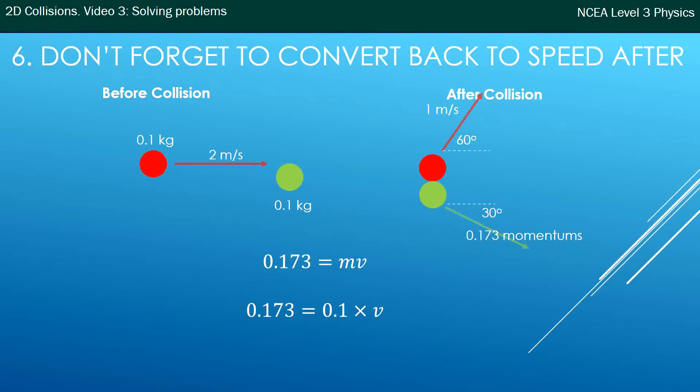The mass is 0.1, and then we divide both sides by the 0.1, and we get velocity equals 1.73 meters per second.